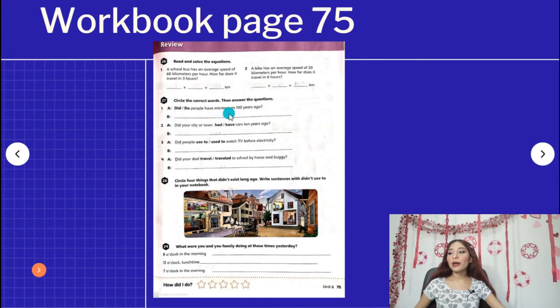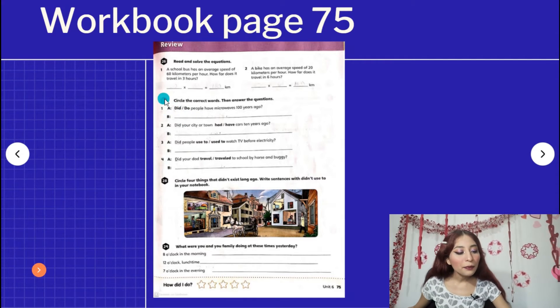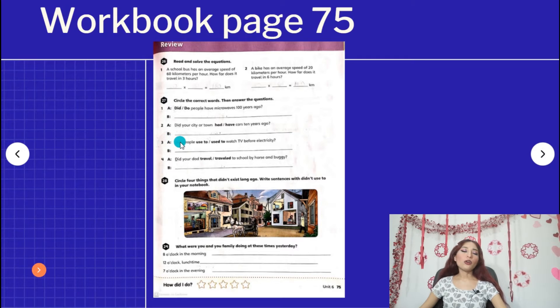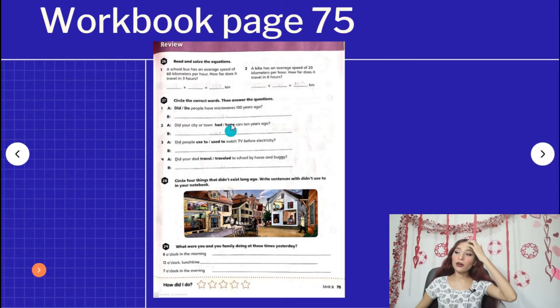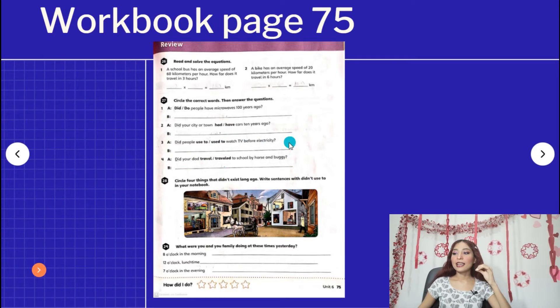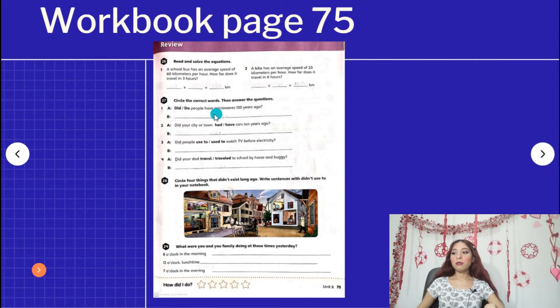Okay, so activity 27: circle the correct words, then answer the questions. Did or do people have microwaves 100 years ago? Entonces vamos a elegir, recuerda que estamos haciendo preguntas en pasado. Did or do? And you can say no they didn't, or yes they did. What do you think? Did your city or town have or had cars 10 years ago?